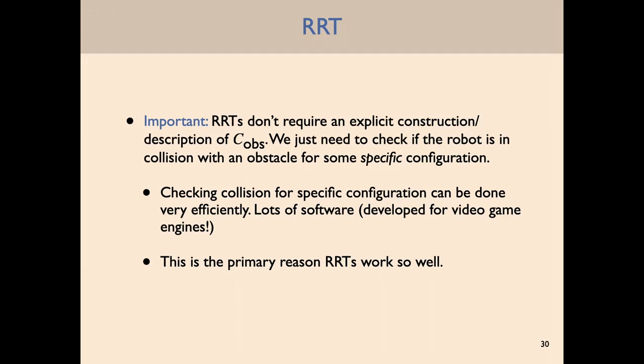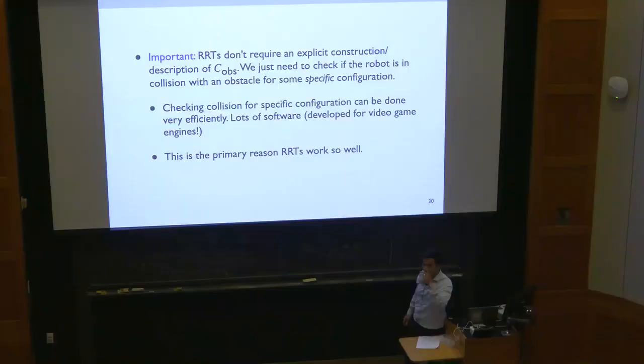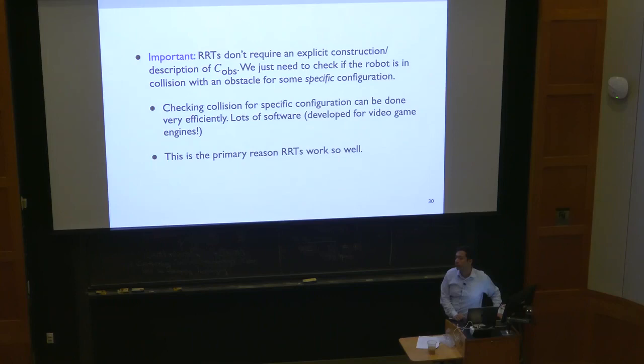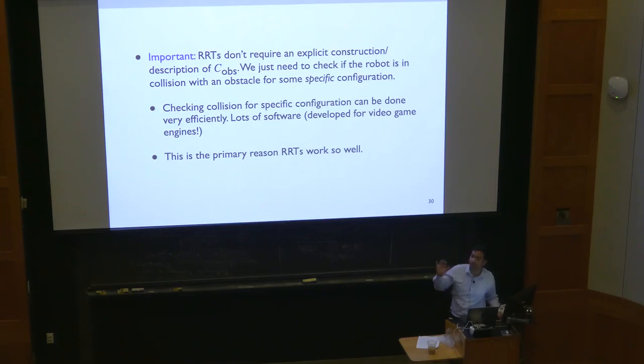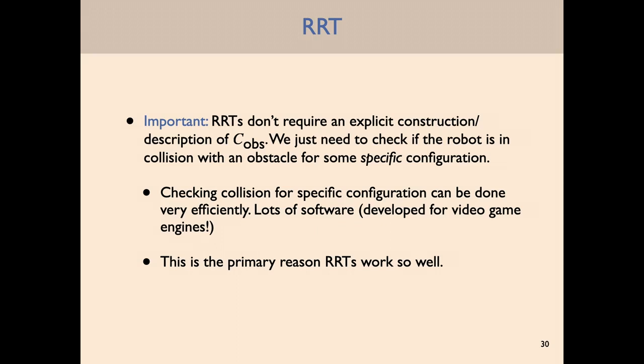A student asks why collision checking is easier than constructing C_obs. The reason: collision checking deals with just one specific configuration — one specific point — and checks whether the robot in that configuration intersects an obstacle. Whereas C_obs requires thinking about all configurations that result in a collision — a much more complicated set. So instead of explicitly representing C_obs, we just rely on this ability to do collision checking for one configuration at a time.